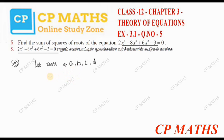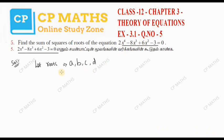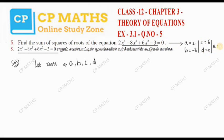We will use the values from the given equation. The equation gives us: a is equal to 2, b is equal to minus 8, c is equal to 6, d is equal to 0 (the x-term is absent, so d equals 0), and e is equal to minus 3.